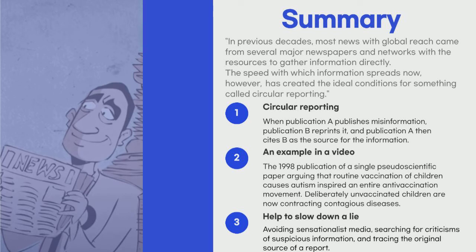First of all, they said that in previous decades, most news with global reach came from several major newspapers and networks with the resources to gather information directly. The speed with which information spreads now, however, has created the ideal conditions for something called circular reporting.